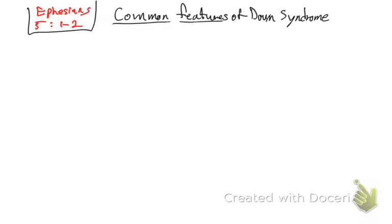So let's talk about Common Features of Down Syndrome. Let's just list these. So they have mental retardation.